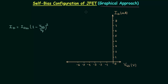Let's follow the graphical approach to find the operating point when an N-channel JFET is biased using a self-bias configuration. In the previous lecture we followed the mathematical approach, and now in this lecture we will follow the graphical approach. The first thing we have to do is plot the transfer curve of the device, which is the plot between drain current ID and input voltage VGS. Like the fixed bias configuration, we will use Shockley's equation to plot the transfer curve.